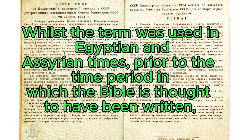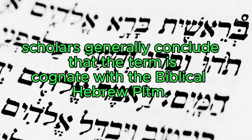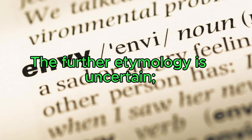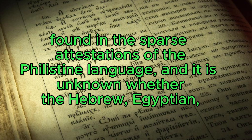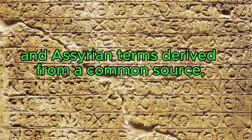Whilst the term was used in Egyptian and Assyrian times, prior to the time period in which the Bible is thought to have been written, scholars generally conclude that the term is cognate with the Biblical Hebrew Peletim. The further etymology is uncertain. It is unknown whether the term was an endonym or exonym — no word for Philistia has been found in the sparse attestations of the Philistine language, and it is unknown whether the Hebrew, Egyptian, and Assyrian terms derived from a common source.